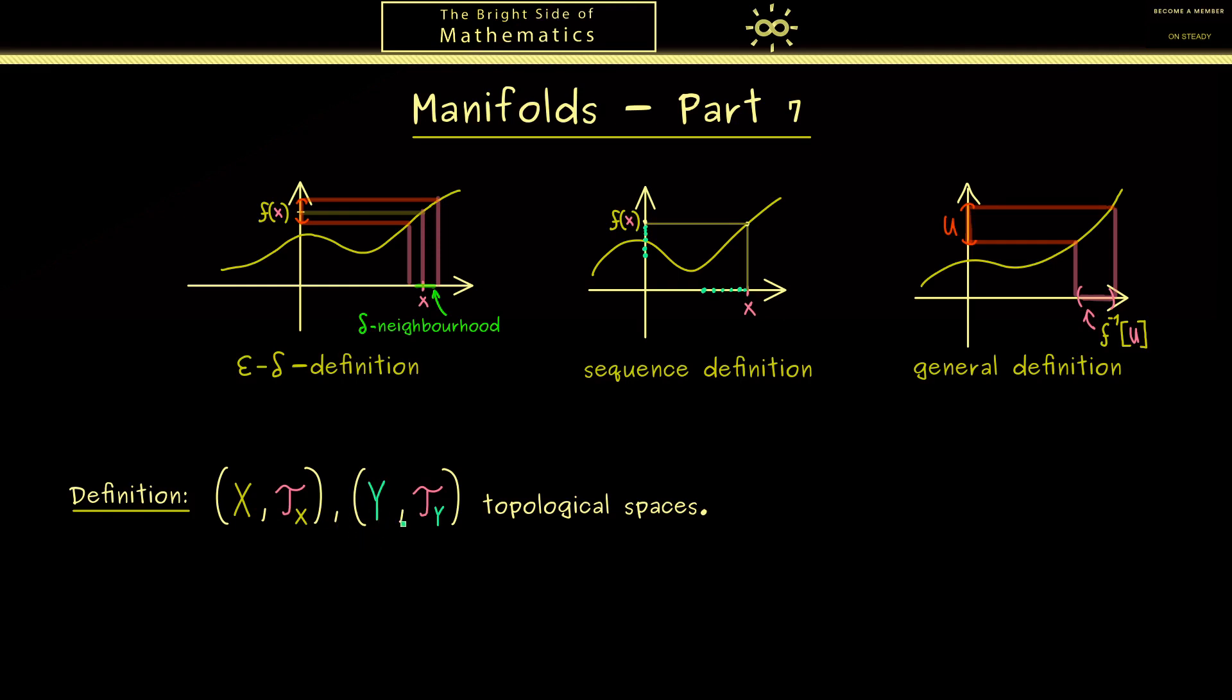For this reason the best visualization would be that we have a set X on the left hand side and a set Y on the right hand side. And then we simply have a map f from left to right, from X to Y. However here, please don't forget we have more structure on the left hand side as well as on the right hand side.